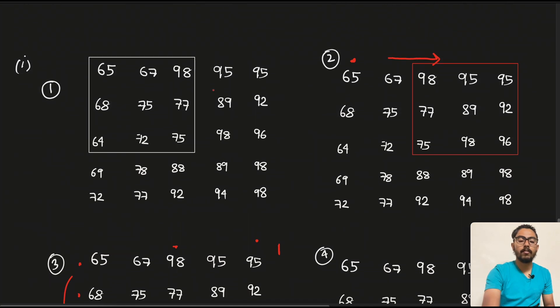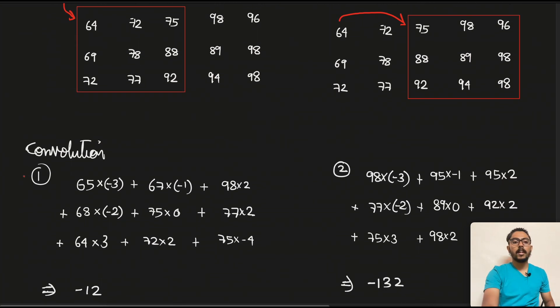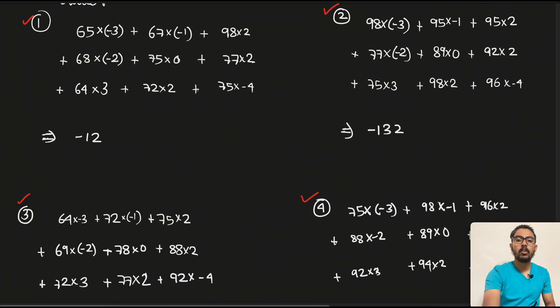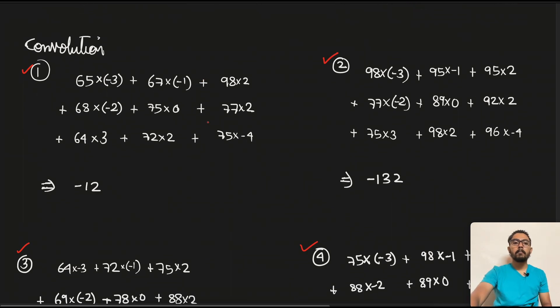Since now we have got all the 4 convolution steps, let's calculate them. So we calculate the first one, second one, third and fourth—simple convolution step. And if you are finding it difficult to make these calculations, I strongly recommend to watch my previous video which I will link in the i button here, and where you will understand convolution with a Laplacian filter, and that will help you to basically understand the calculations we are performing here.